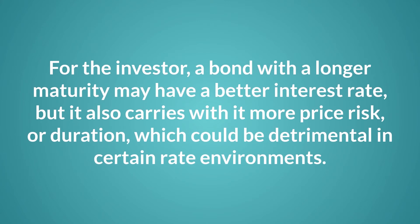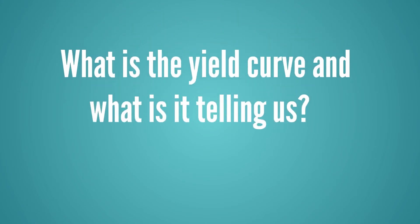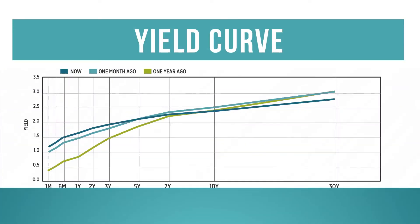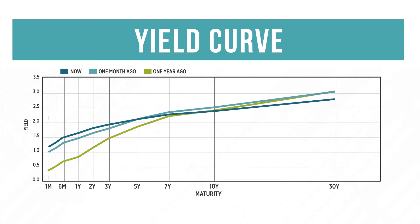For the investor, a bond with a longer maturity may have a better interest rate, but it also carries with it more price risk or duration, which could be detrimental in certain rate environments. Now that we've reviewed the concept and relationship of bonds, prices, and yields, we need to determine what the yield curve is and what it is telling us. The yield curve is just a line on the graph that plots out the relationship between bond yield and its maturity.